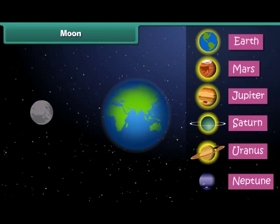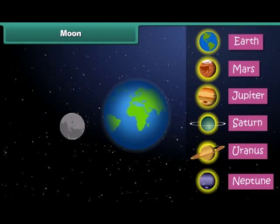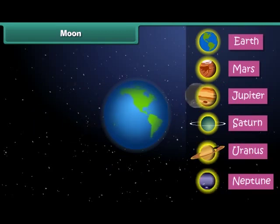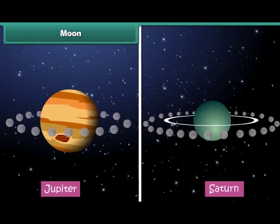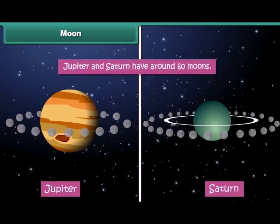Saturn, Uranus and Neptune are the other planets that have moons. While Earth has only one moon, all other planets have more than one. Jupiter and Saturn have around 60 moons each.